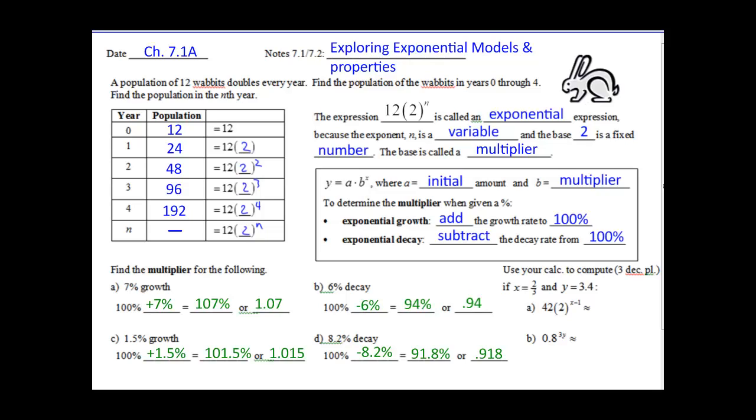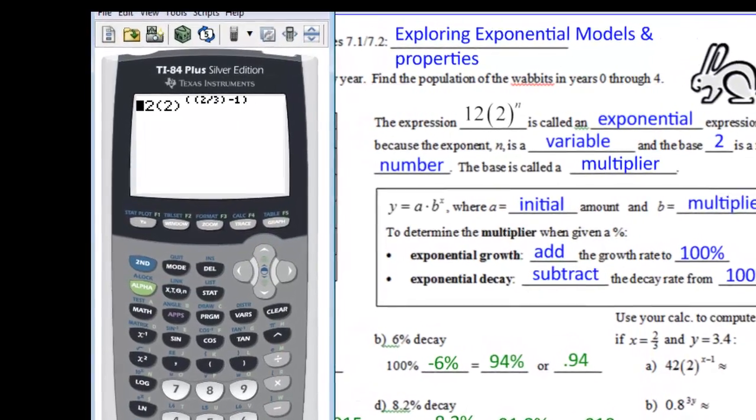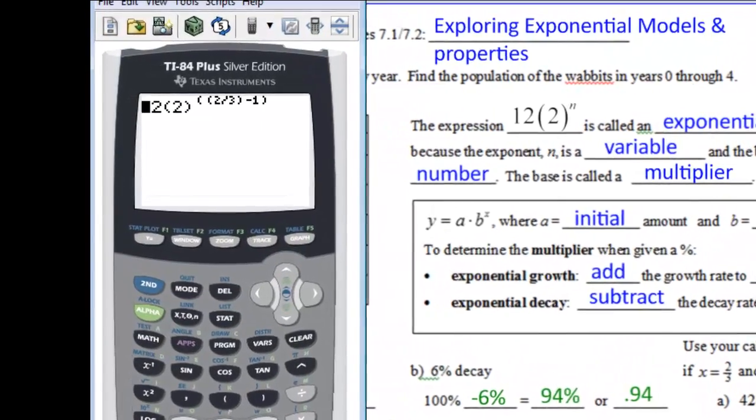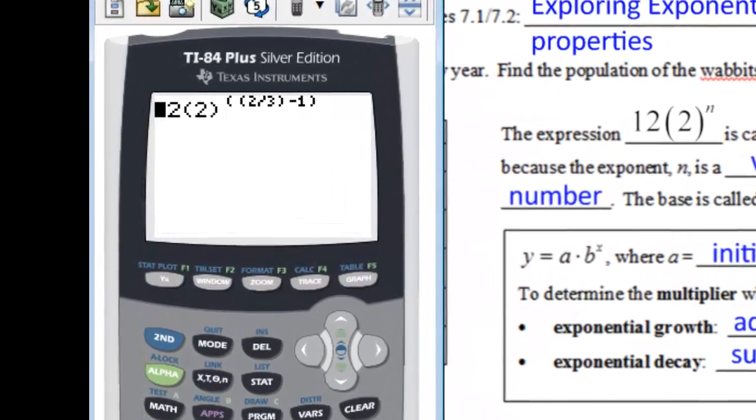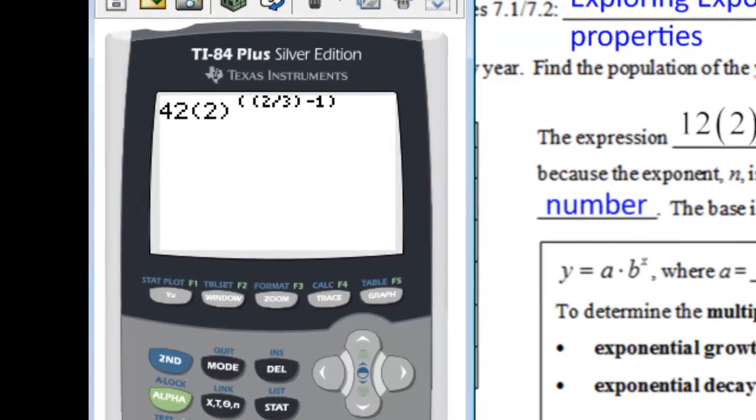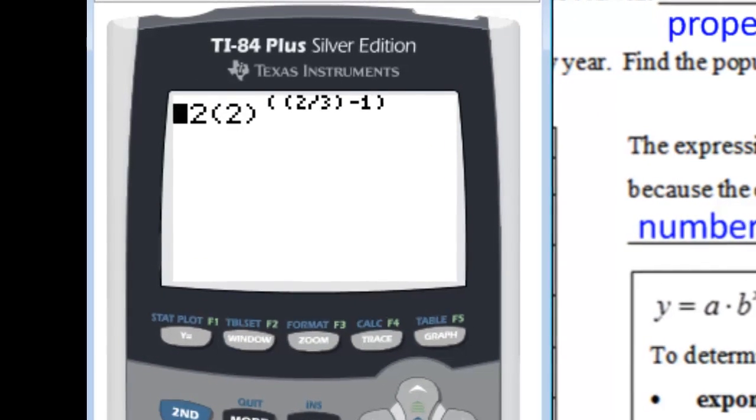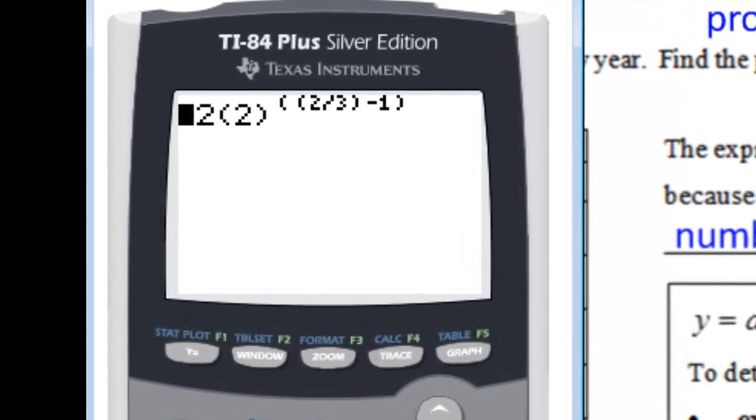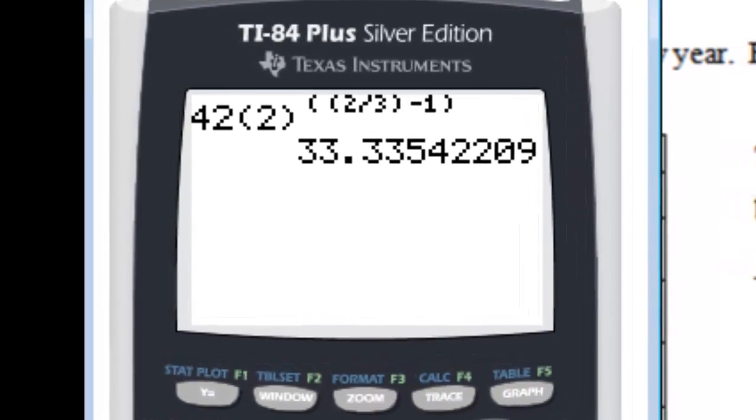So some calculator functions. We need to compute these to three decimal places. We're going to take 42 times 2 to the x minus 1. We're going to plug in 2/3. So if I look at my handy-dandy calculator, we already have the function up here: 42 times 2 raised to the 2/3 minus 1. And be careful, because if you do end up putting in 0.66 or 0.67, it's not rounded correctly. 2/3 carries on 0.666666... So if we hit enter, we get 33.335.